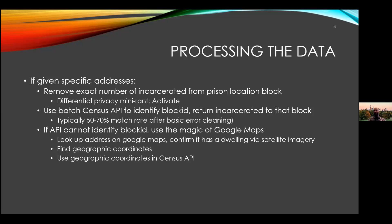If I ever meet you and we have drinks, that will be one of my rants. So having gotten individual addresses, having removed them from the prison facility, we use the census's API — a website the census created for 2020 to identify the block ID of that particular address. So they gave me, say, 121 Market Street, Philadelphia, zip code 19103. I plug that into the census API and it gives me the census block ID for that address.